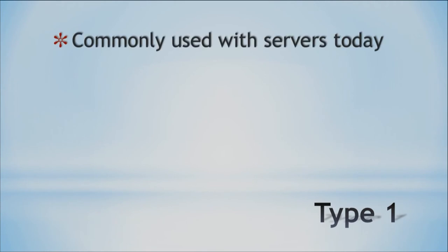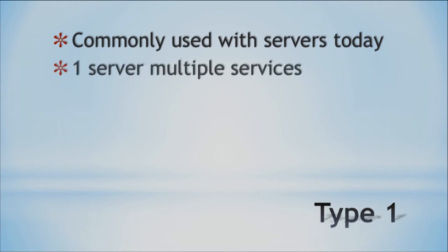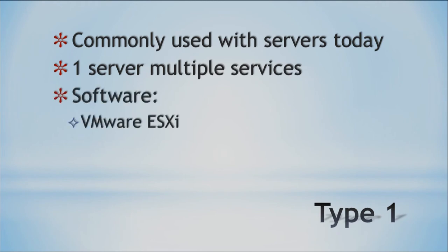Type 1 virtualization runs directly on the system itself and is commonly used with servers in companies today. You can buy one server but run multiple services on it — for example, one virtual machine can be your email server and another can run your web server, all on one physical machine. Software for this includes VMware ESXi, probably the most popular, and Citrix XenServer.